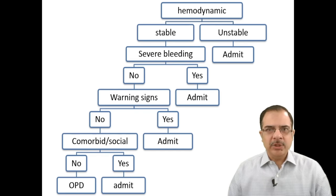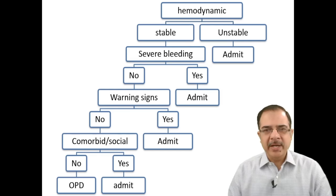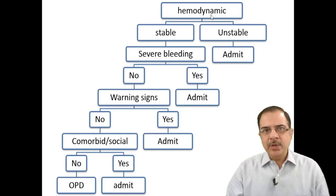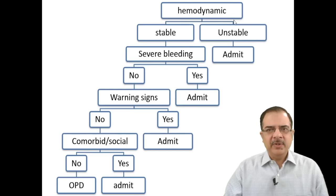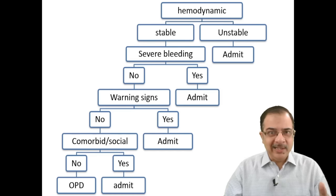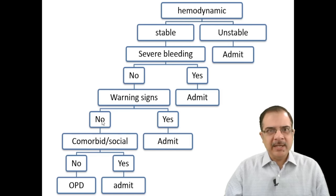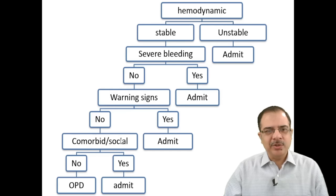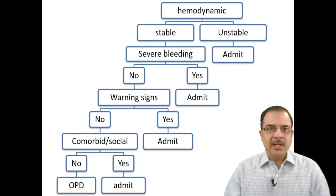This WHO recommendation flow chart guides treatment decisions in the OPD. When a patient presents, first assess hemodynamic stability — most importantly blood pressure, capillary refill time, and extremity temperature. If unstable, admit. If stable, check for severe bleeding — if present, admit. If no severe bleeding, look for warning signs — if present, admit. If no warning signs, look for comorbid conditions or social issues — if present, admit. If none are present, manage in OPD.